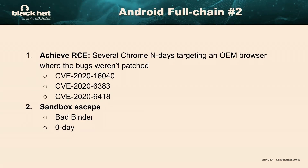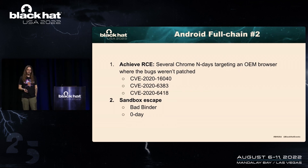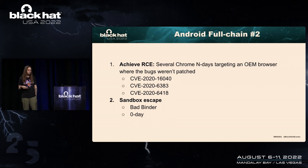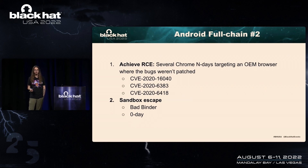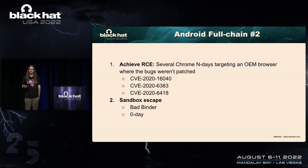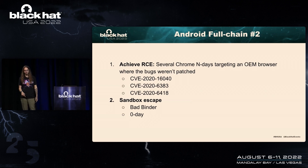That was the first full chain. The second one is directly related to the exploit that Xinyu and Richard will talk about. This surveillance vendor used a different strategy: instead of using zero days against Chrome, they were targeting a Chrome-based browser lagging behind in patches, so they could use n-days against these browsers as if they were zero days. Depending on the browser version, they had three different bugs they would bundle with their exploit.